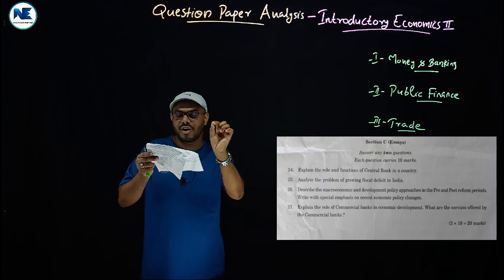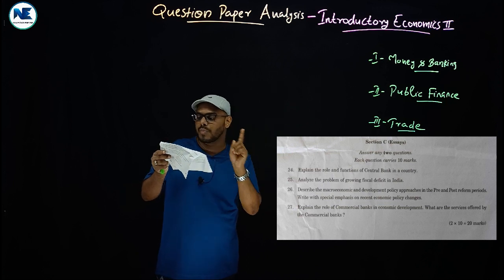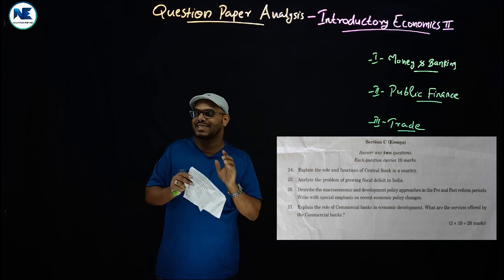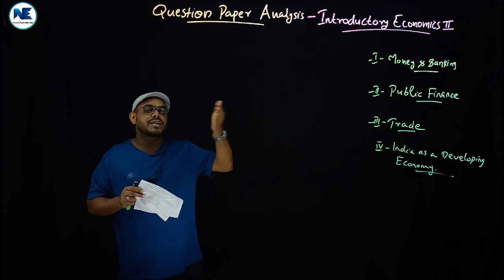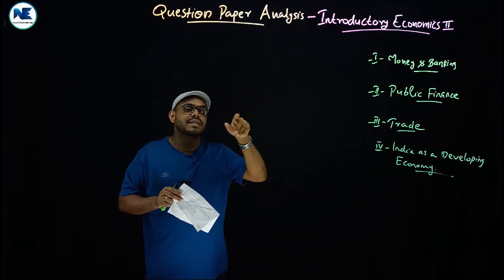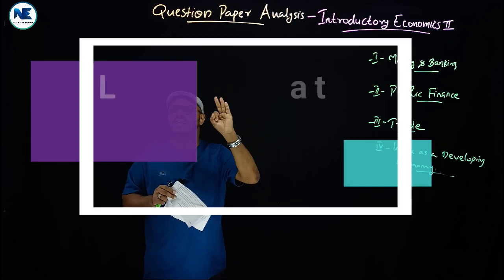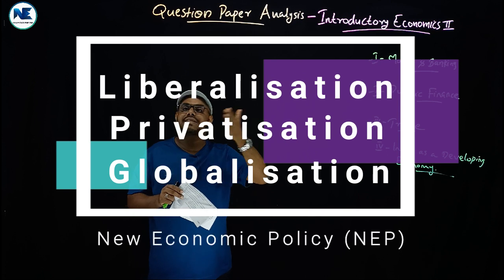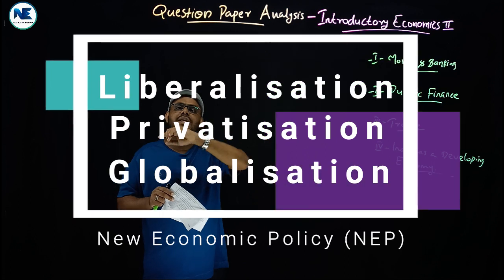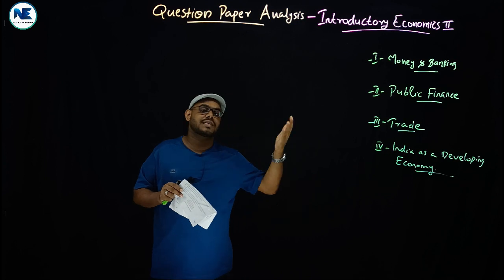The twenty-sixth question: describe the macroeconomic and development policy approaches in the pre- and post-reform periods, with special emphasis on recent economic policy changes. The pre-reform period was from 1947 to 1991, followed by the New Economic Policy of 1991 — liberalization, privatization, and globalization. India has a mixed economy. In the pre-1991 period, the public sector was dominant, while in the post-1991 period, the private sector has become dominant.